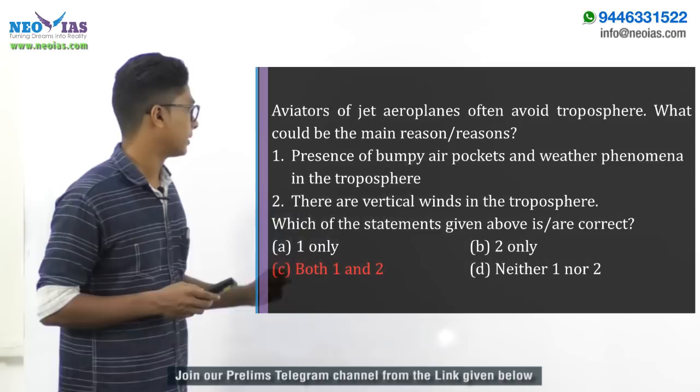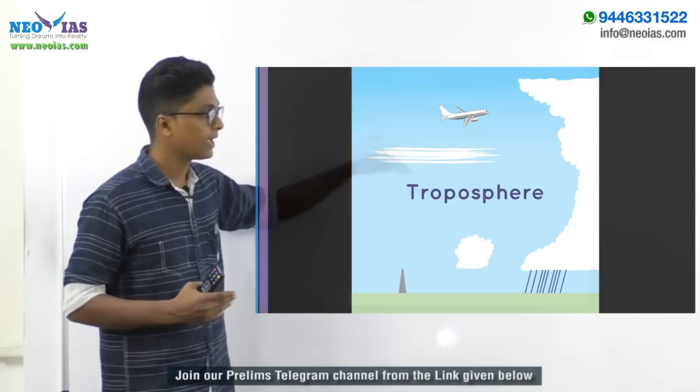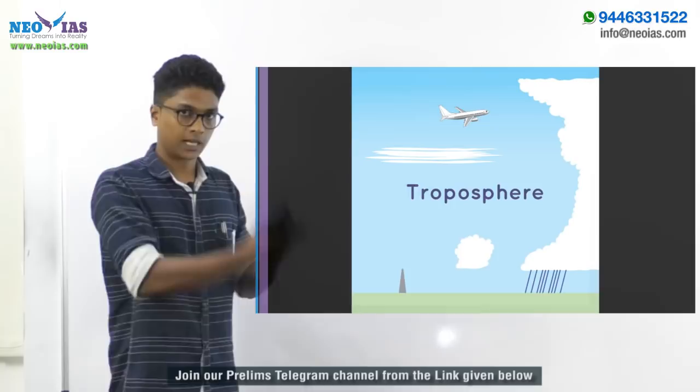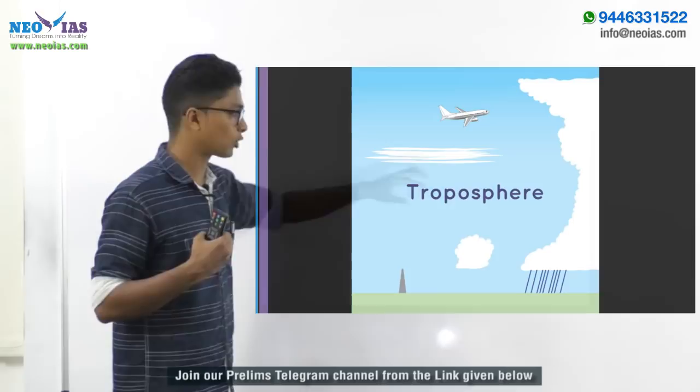If you look at different atmospheric layers, the troposphere has a majority of the weather events taking place. We have different layers like the troposphere, stratosphere, mesosphere, and thermosphere. In all these layers, the troposphere has more cloud formations and more weather events and weather changes taking place.